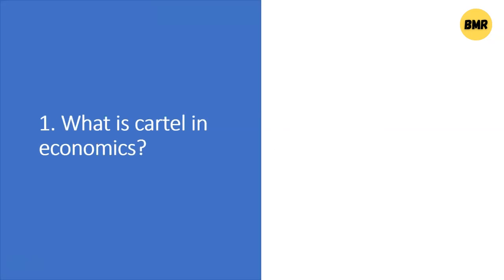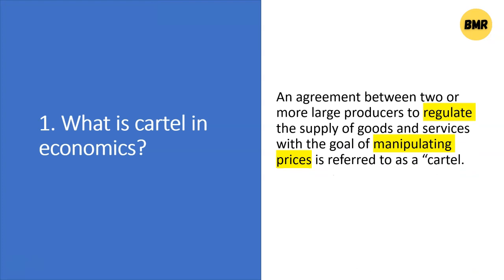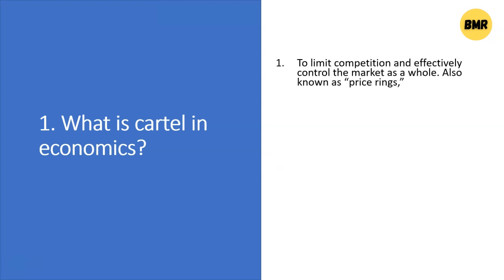Number one: what is cartel in economics? An agreement between two or more large producers to regulate the supply of goods and services, with the goal of manipulating prices, is referred to as a cartel. This definition explains two or more producers who are trying to manipulate price. To achieve this, the producers must agree to work together to limit competition and effectively control the market as a whole.